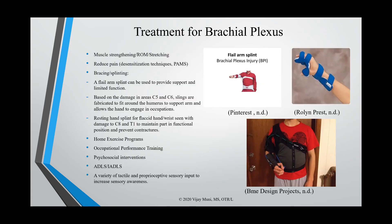In terms of treatment for brachial plexus injuries, we can do muscle strengthening, range of motion, and light stretching. We also want to reduce pain through physical agent modalities and desensitization techniques. For splinting: a flail arm splint provides support and hand function; slings fitted around the humerus support the arm for C5 and C6 injuries; and a resting hand splint is fabricated for the flaccid hand and wrist typically seen with C8 and T1 injuries to maintain functional position and prevent contractures.